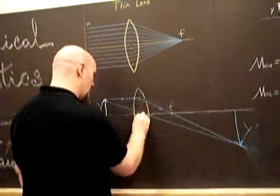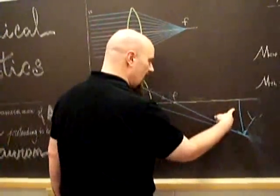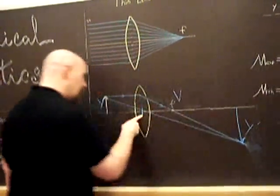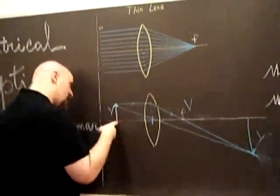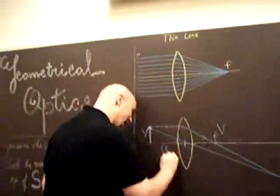So let's put some more labels on. From the center of the lens to the image, we'll call it V. From the center of the lens to the object, we'll call it U.